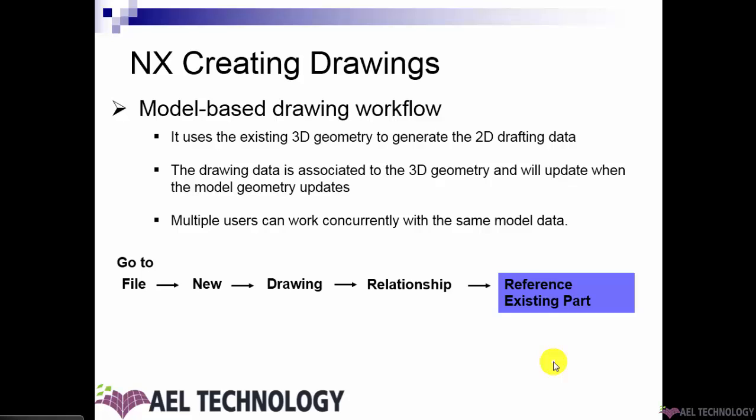In this method, the 3D model and the 2D drawing are in association, and any changes in the 3D geometry will get reflected each time when we update the drawing. The advantage of using this method is that it allows multiple users to work concurrently, as the 3D model and the 2D drawings are separated and saved as individual CAD files. Let us see how to create a drawing by referencing an existing 3D CAD model in UG environment.